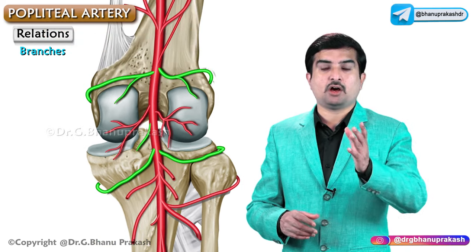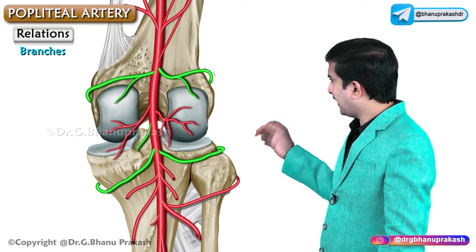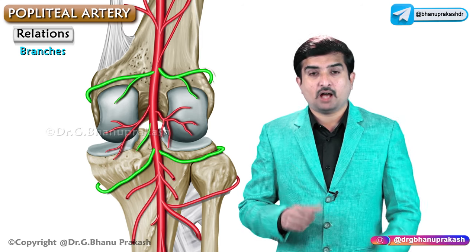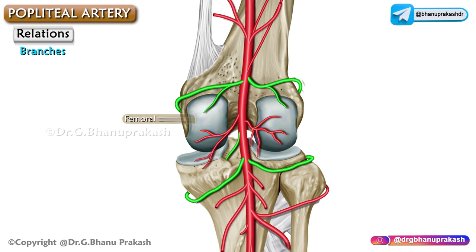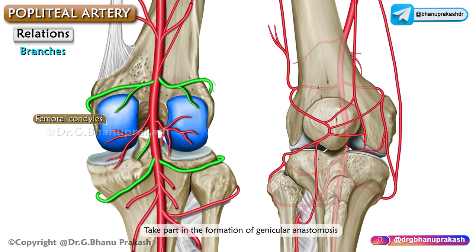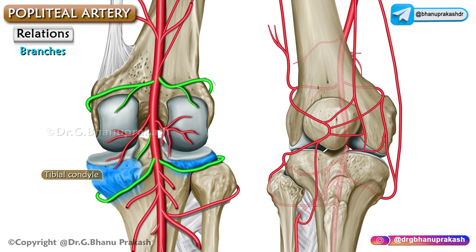The genicular or articular branches are five in number and supply the knee joint. The superior medial and lateral genicular arteries wind around the corresponding side of the femur immediately above the corresponding femoral condyles and take part in the formation of genicular anastomosis. The inferior medial and lateral genicular arteries wind along the tibial condyles and pass deep to the corresponding collateral ligaments of the knee, also taking part in the genicular anastomosis.